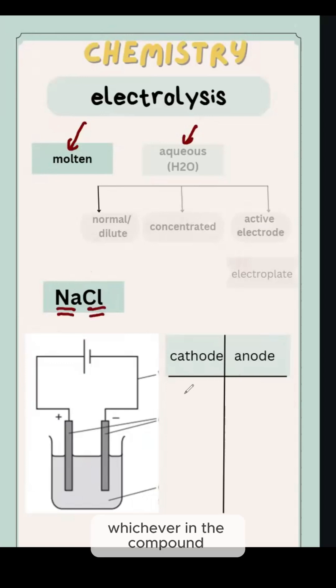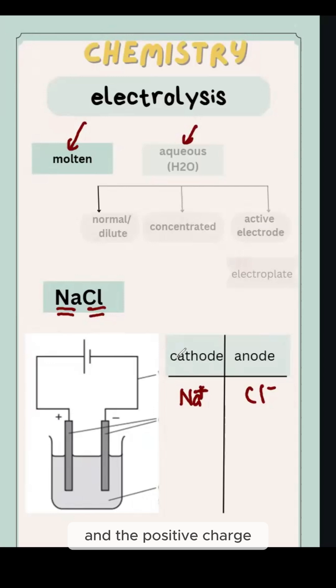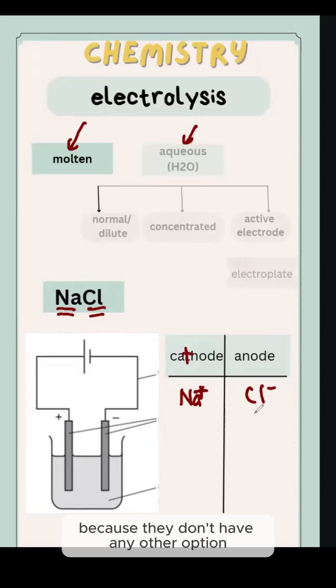Whichever in the compound will be the ion. NaCl will have Na positive and Cl negative. And the positive charge go to cathode. Because they don't have any other option, we will directly discharge them.